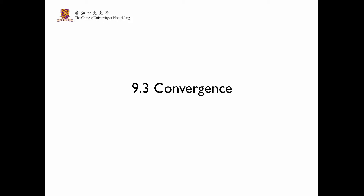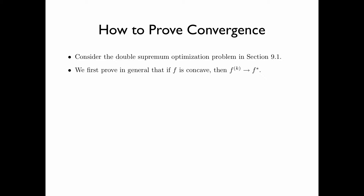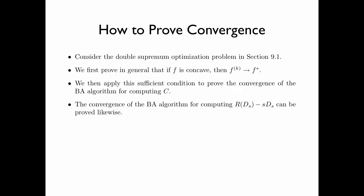In section 9.3, we prove the convergence of the alternating optimization algorithm. Here are the steps to prove the convergence. Consider the double supremum optimization problem in section 9.1. We first prove in general that if f is concave, then f_k tends to f*. We then apply this sufficient condition to prove the convergence of the Blahut-Arimoto algorithm for computing C. The convergence of the Blahut-Arimoto algorithm for computing R_d can be proved likewise.